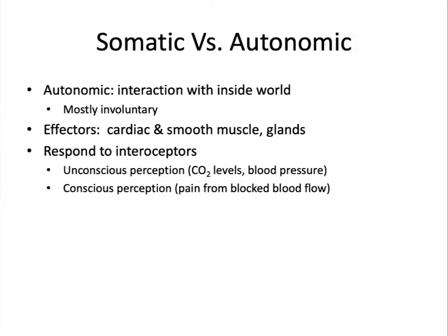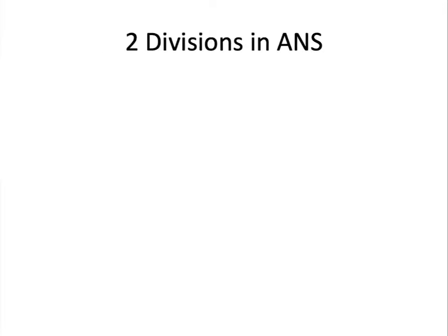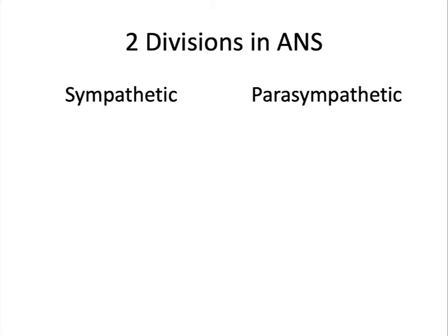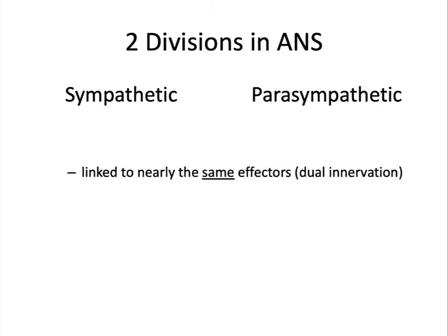Within the autonomic nervous system are two divisions: sympathetic and parasympathetic. These mostly use the same effectors, which we call dual innervation. However, the two divisions are antagonistic. While both divisions might have effects on heart rate, one division will have an excitatory effect and speed up the heart rate, and the other may have an inhibitory effect and slow it down. They do this by using different neurotransmitters, which allows the target organ to respond differently to stimulation by one or the other division.